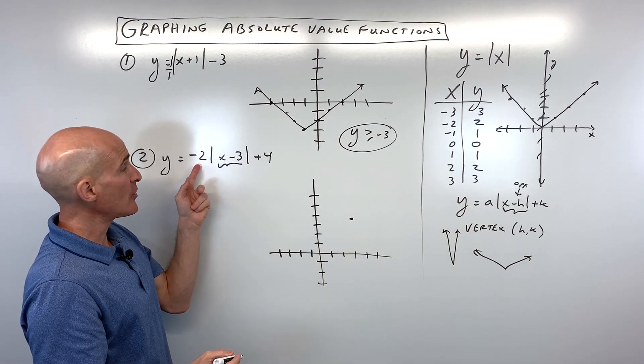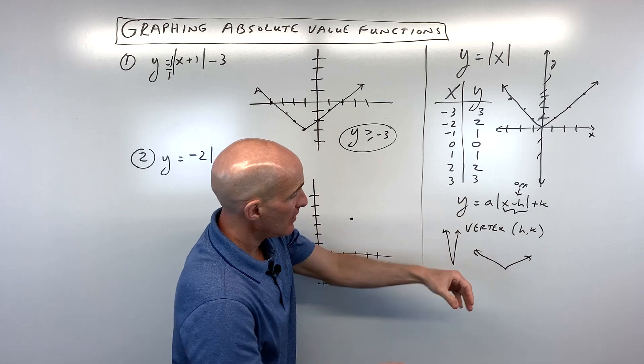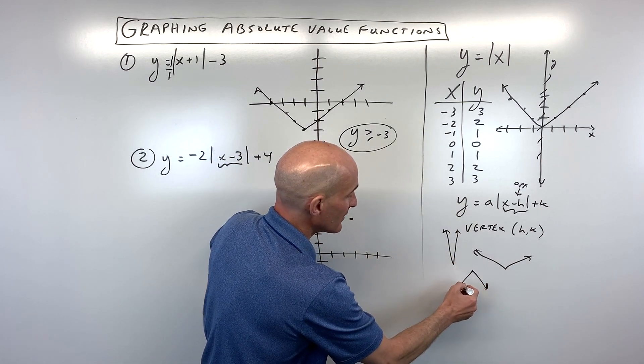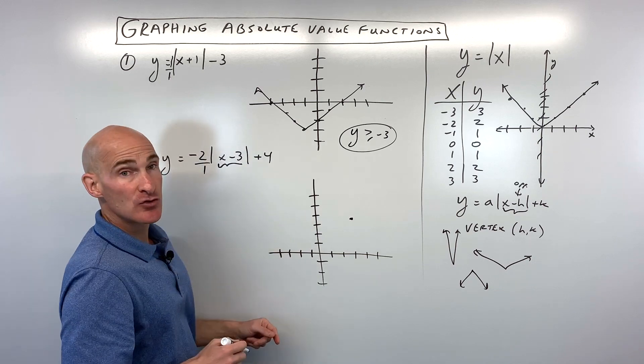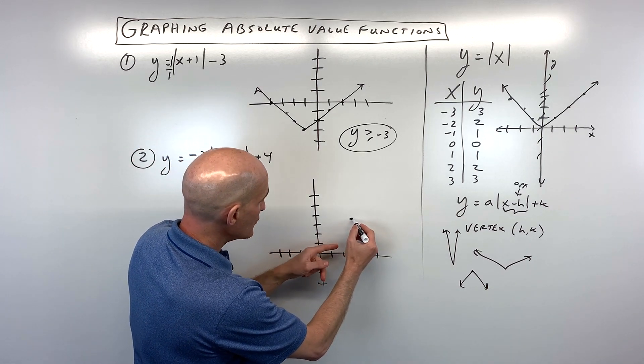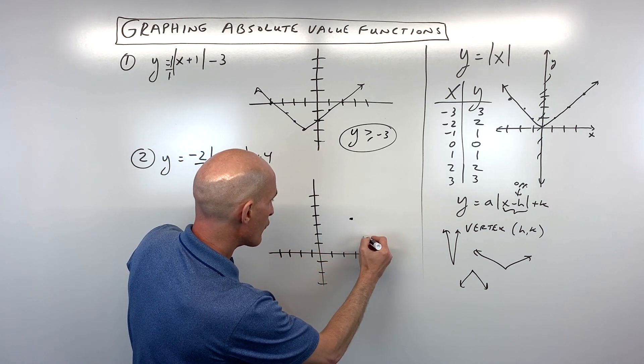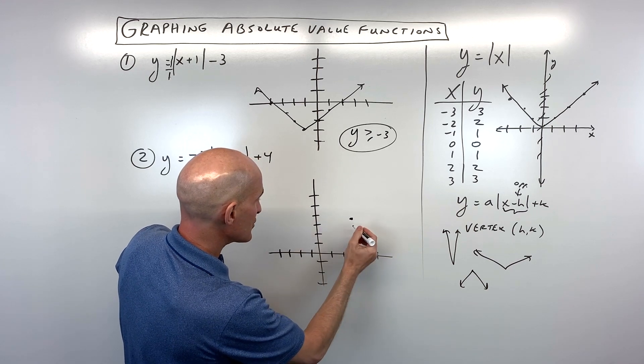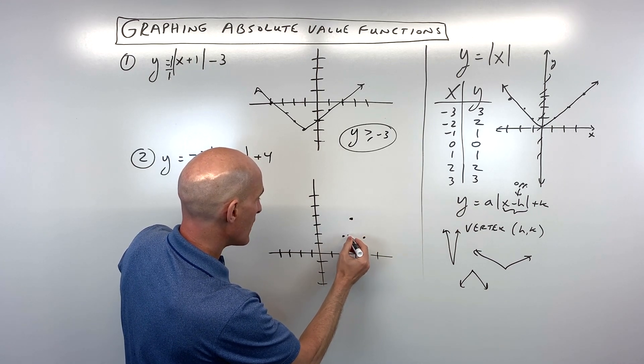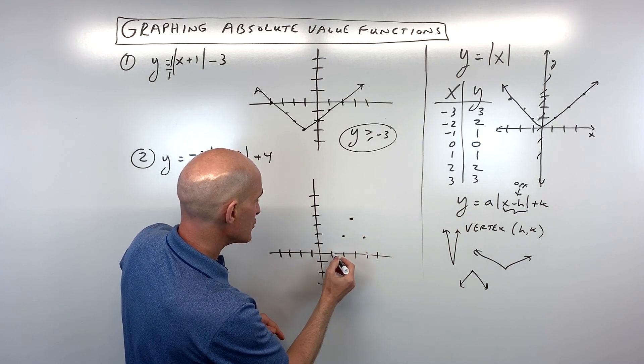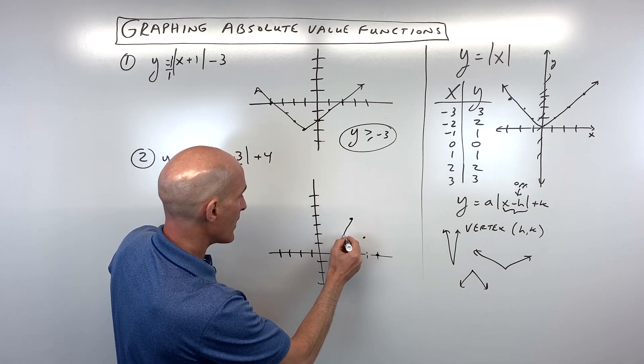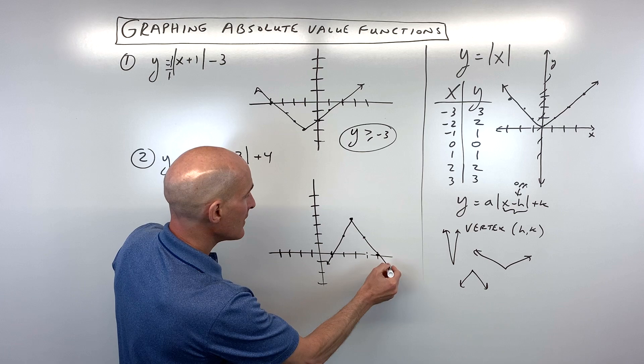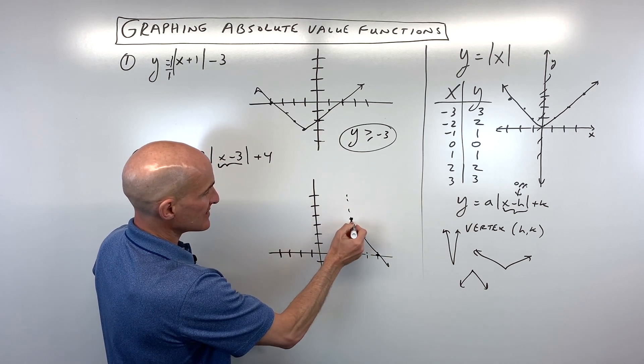But this a value is negative. So we know that the graph is going to be opening down, something like that. And the negative two, we can think of like the slope. That's like negative two over one. So from here, I'm going to go down two, one, two, and right one. And I'm going to reflect it. So I could go down two and left one. And I'll repeat that again. Down two, left one. From here, down two, right one. So you see how that's slope.